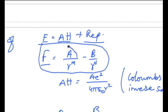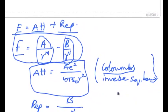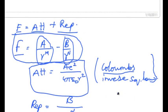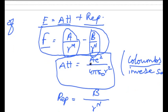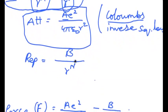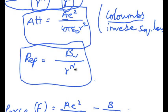Here a by r power m is the attractive force and b by r power n is the repulsive force. From Coulomb's inverse square law, the attractive force is equal to a e square by 4 pi epsilon not into r square. The repulsive force is equal to b by r power n, where b is the repulsive constant and n is the bond repulsive constant. The value of n lies between seven to twelve.